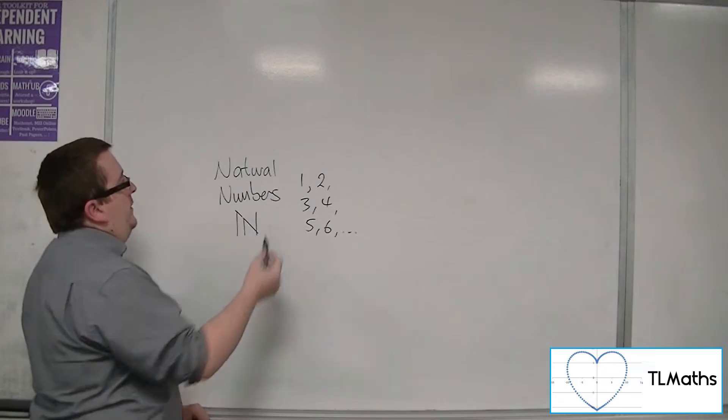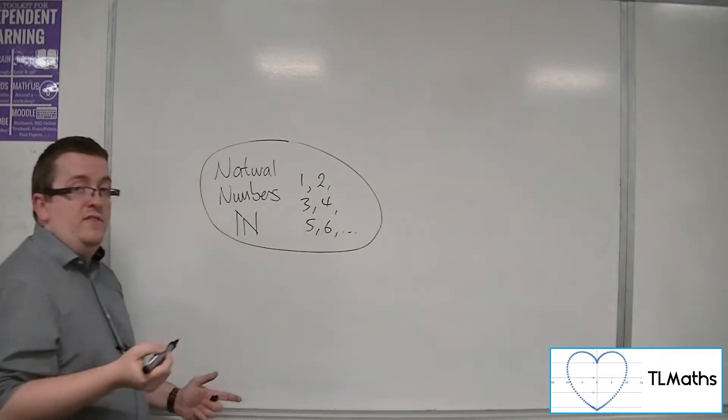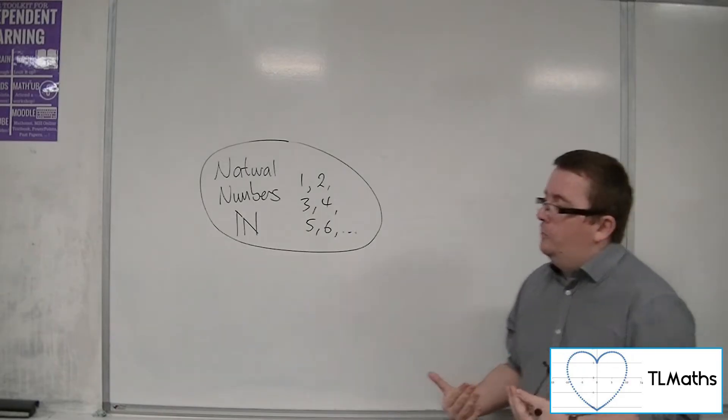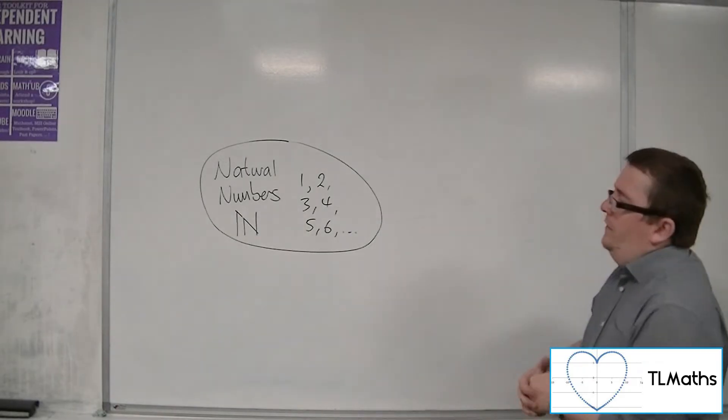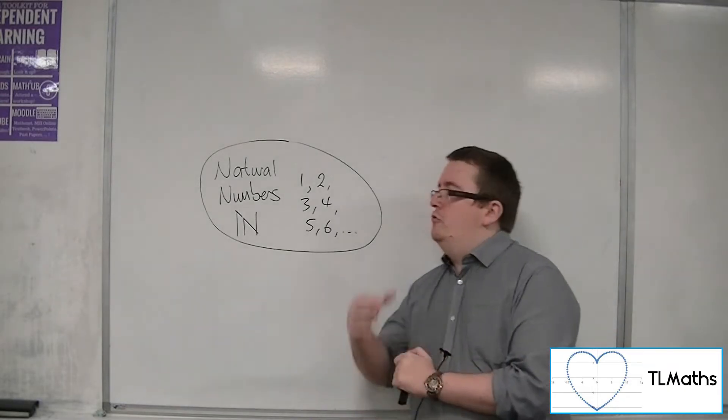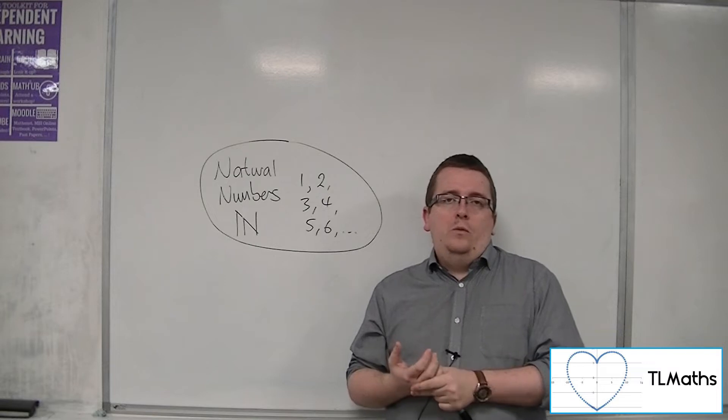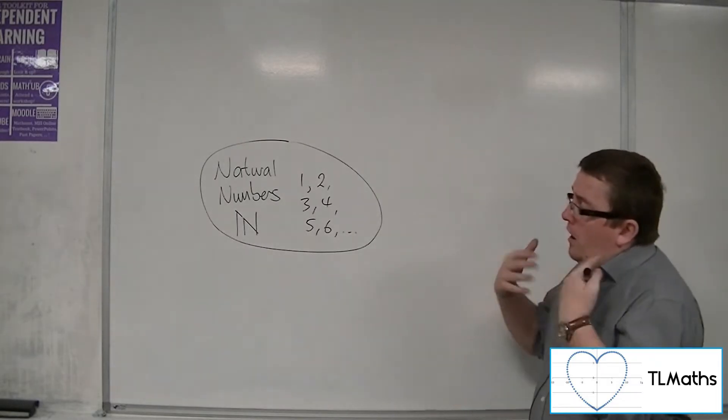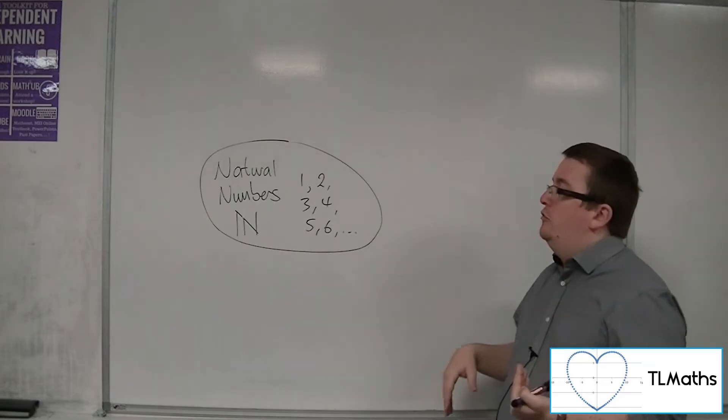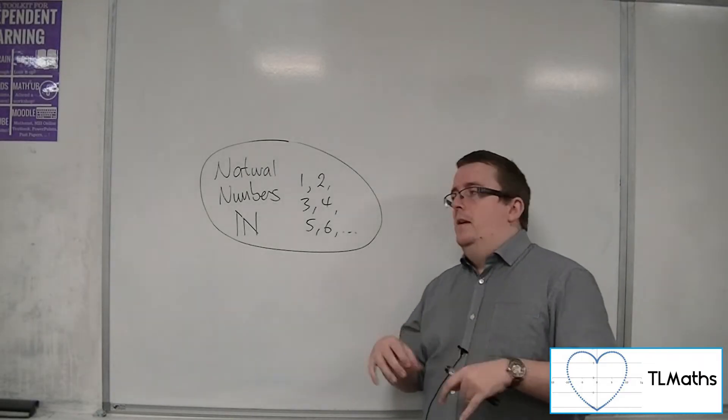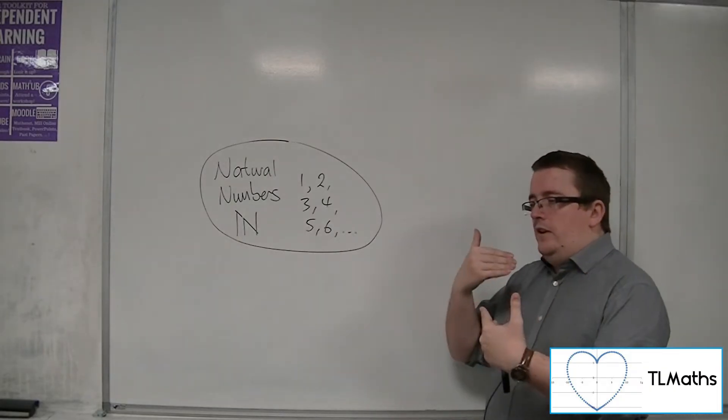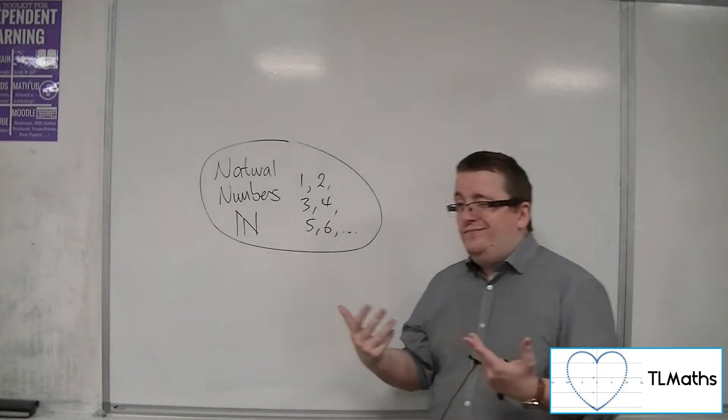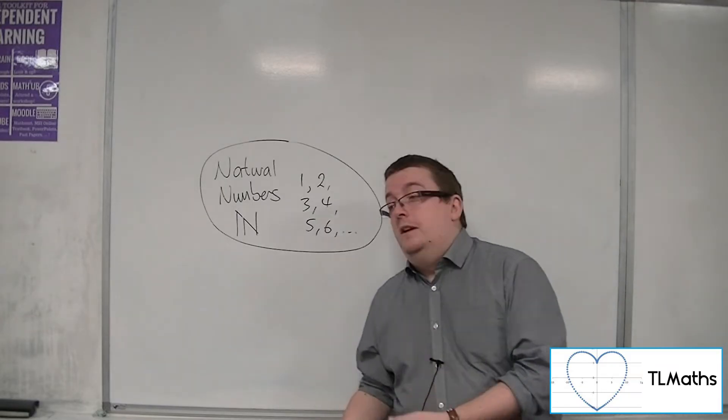Now, you'll notice that I'm not including 0 there or negative numbers for that matter. Negative numbers, maybe you can see as to why we might not include them at this point. But 0, that's a little bit more of a contentious issue, I'm afraid. Usually with things in mathematics, we are very definite on whether 0 is a natural number or not. For our specification, 0 is not a natural number. But it's not something that you're going to get tested on in the exam. But it is good to know that there is this kind of argument going on outside. Some people say that 0 is a natural number. Some people say that it's not.